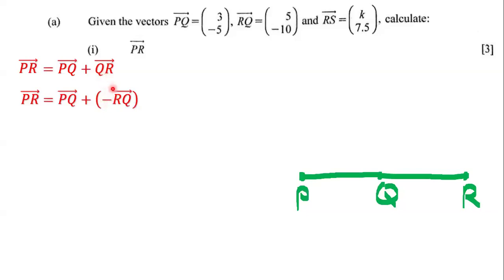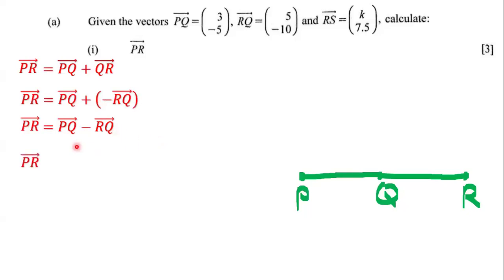So QR is equal to negative RQ — they are saying the same thing. If I want to switch the letters, I have to put a negative out front. So we have PR is equal to PQ plus negative RQ, and positive multiplied by negative is negative, so PR is equal to PQ minus RQ. PQ is equal to (3, -5).